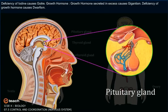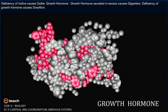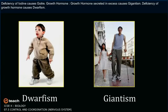Growth hormone, when secreted in excess, causes giantism. Deficiency of growth hormone causes dwarfism.